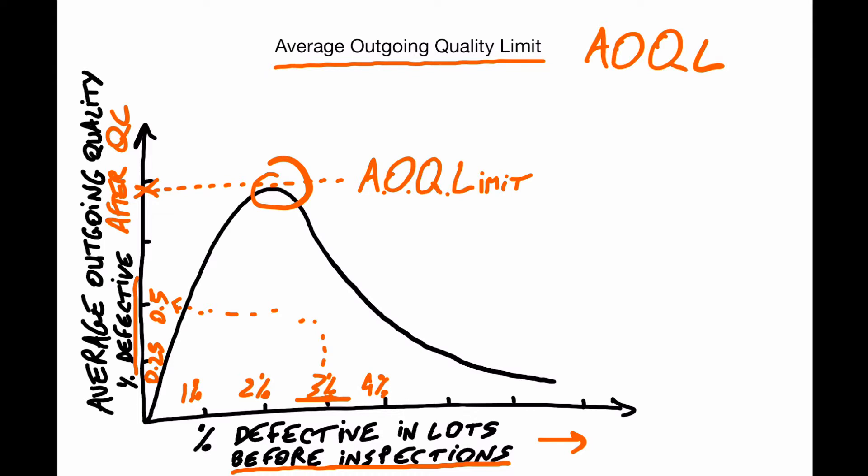If you put this on this kind of two by two graph, you have this type of curve. You look at this point here, the maximum, the highest number on this curve is the average outgoing quality limit. AOQ is the average outgoing quality after inspection, which is in the y-axis here. You find the maximum on the curve. What is the maximum of the AOQ? It's called the AOQL limit. You need to collect a little bit of information or maybe make an educated guess and over time get back to it and maybe refine it.